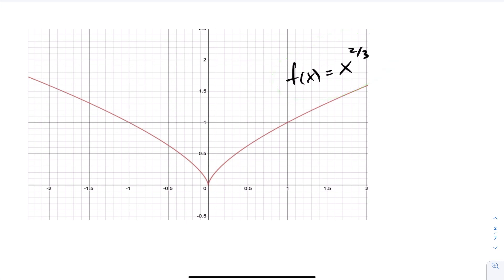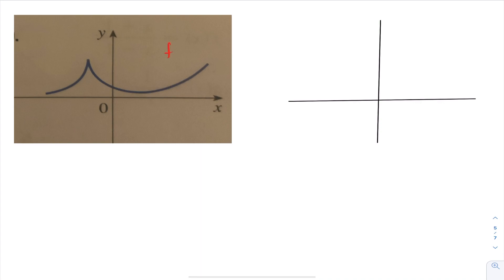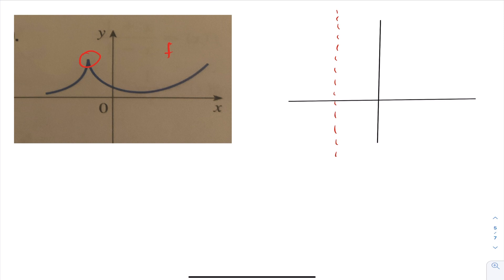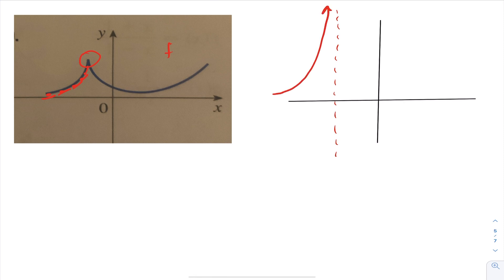Let's look at an example of graphing a function f alongside its derivative. The first thing I notice is I have a peak — that is a point where the function is not differentiable, so at that point the derivative will have a vertical asymptote. As the function f approaches this peak, the slopes of the tangent lines become very, very steep, almost perfectly vertical. So the graph of f prime is going to approach that vertical asymptote from one side.